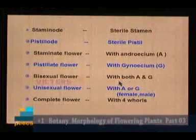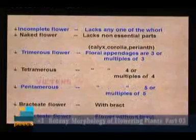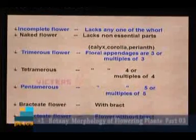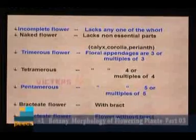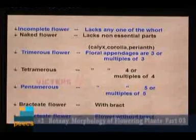Complete flower — flower with four whorls: calyx, corolla, androecium, and gynoecium. If a flower has all four whorls it is called the complete flower. Incomplete flower lacks any one whorl — for example, female flower, flower with perianth, male flower, naked flowers. Naked flower lacks non-essential parts — calyx, corolla, and perianth. If these are absent, the flowers are called naked flowers.